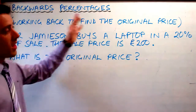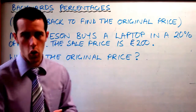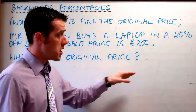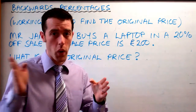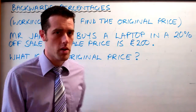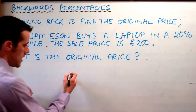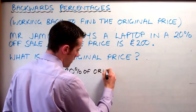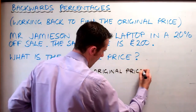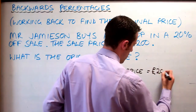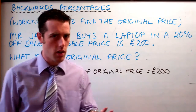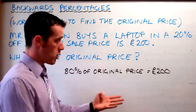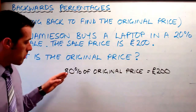The question will say find the original price, usually given in a little story context. We have to think first of all how much, as a percentage of the original price, is £200. Because if we take the original price and take off 20%, we're left with 80%, and that's the £200. So we say that 80% of our original price is £200.